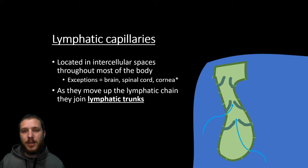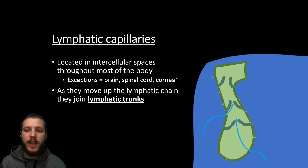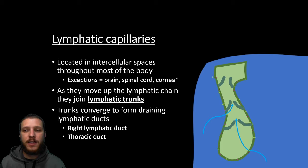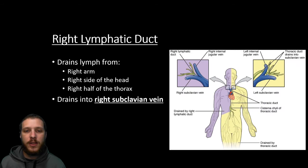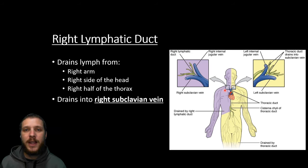The big difference is the cardiovascular system travels in a loop around the body, whereas the lymphatic system goes in one direction and drops fluid off — it doesn't loop. As fluid moves up these capillaries, the vessels become larger; we call these lymphatic trunks. These trunks converge to form the draining lymphatic ducts, found deep to the clavicles. There are two: a right lymphatic duct and a thoracic duct on the left side. The right lymphatic duct drains the right arm, right side of the head, and right half of the thorax into the right subclavian vein, which connects into the superior vena cava and back into the cardiovascular loop.